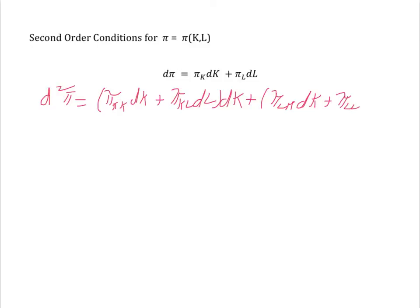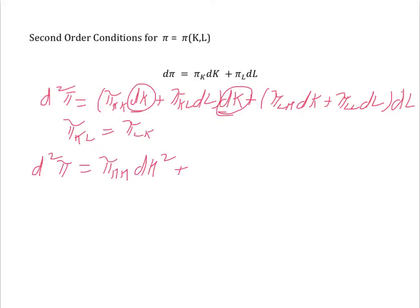That is, the cross products are the same, the order of differentiation doesn't matter. So I end up with, I can combine terms, the second differential is going to be equal to Pi KK dK squared, just combining these two terms, plus 2 times Pi KL dL dK, these terms here, plus Pi LL dL squared.